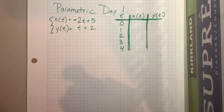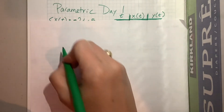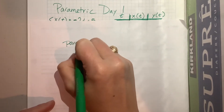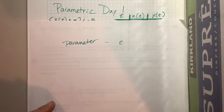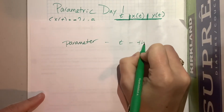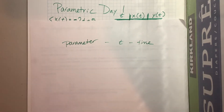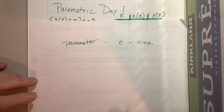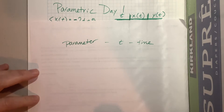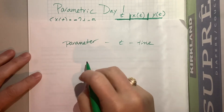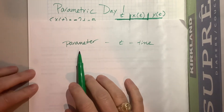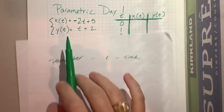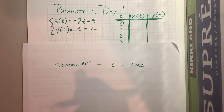A parametric equation is called that because it introduces a new parameter, and typically that parameter is t, and t typically refers to time. It doesn't have to, but that's often the case, and in our pre-calc class, that's pretty much the world we live in. What it will do is allow us to write x and y in terms of this third variable, t, for time.